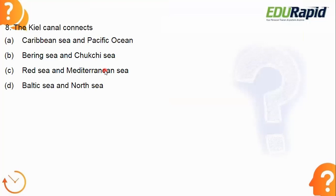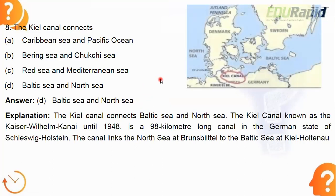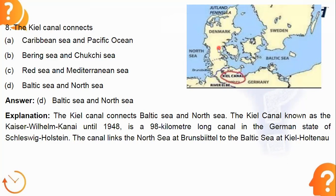Next: the Kiel Canal connects which two seas? The answer is option D — the Baltic Sea and the North Sea. You can see in the picture: the red line is the Kiel Canal connecting the North Sea on one side and the Baltic Sea on the other. Germany and Denmark border this canal.